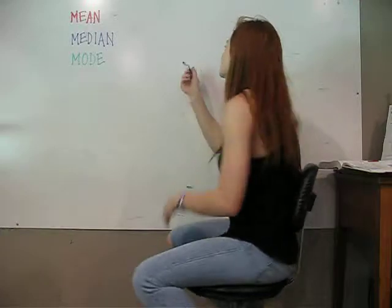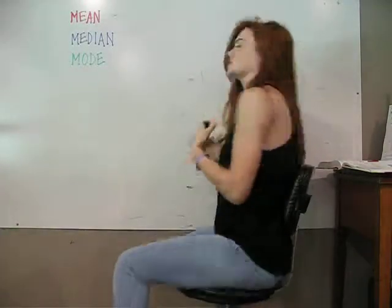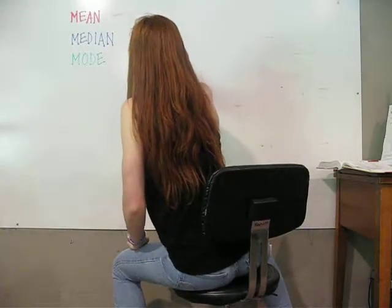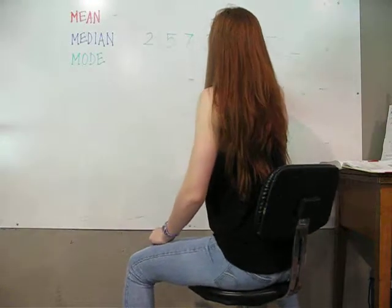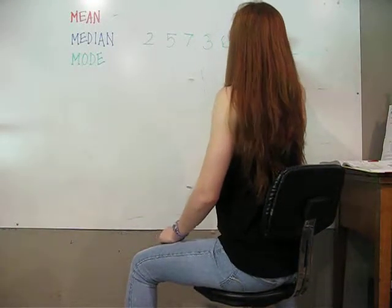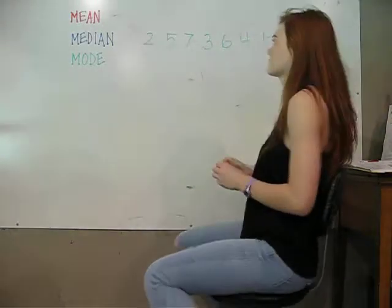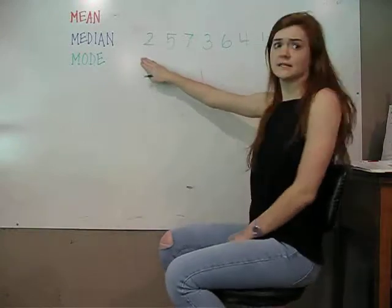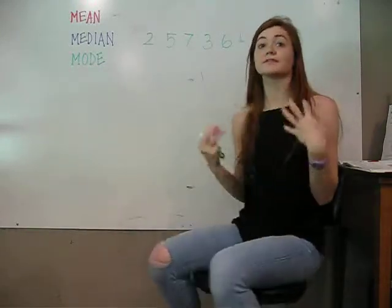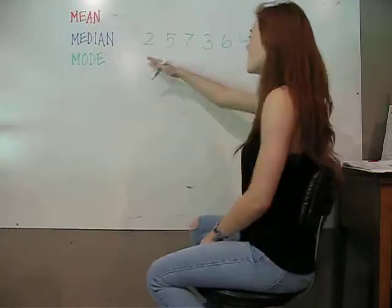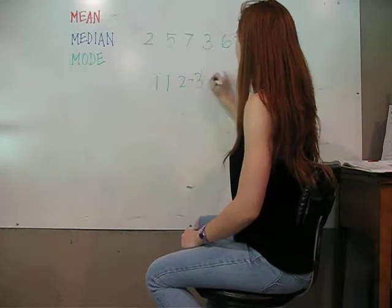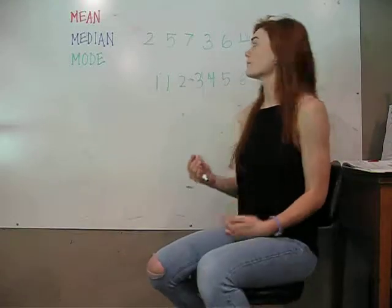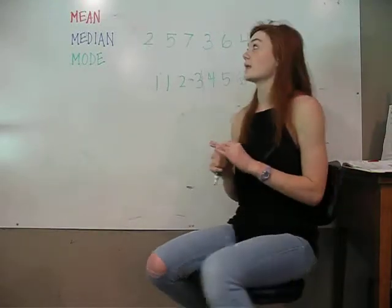We're going to write a random set of data, sticking between 1 and 15 to start. So we have: 2, 5, 7, 3, 6, 4, 1, 1, 8. The numbers aren't in order, but the first step you need to do for each of these three things is put all the numbers in order from least to greatest. Make sure you got all of them, and also count the number of numbers in your data set, because you're going to use that when it comes to mean.